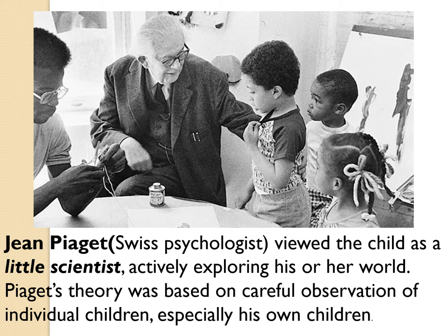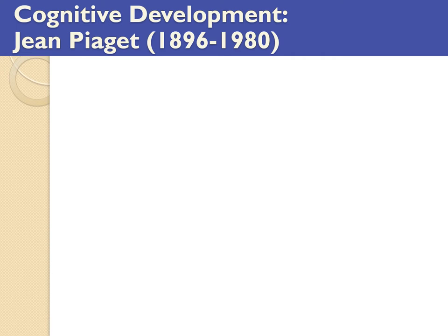Piaget was a Swiss psychologist who thought of children as little scientists — always exploring their world using all their senses. He observed and interacted with children extensively to build his understanding of cognitive development.